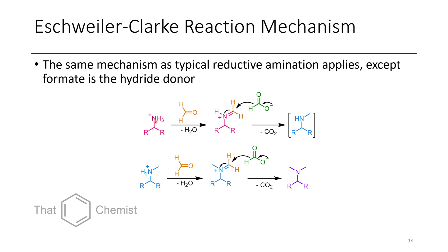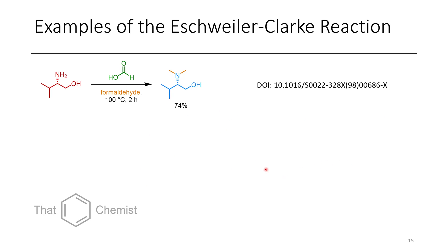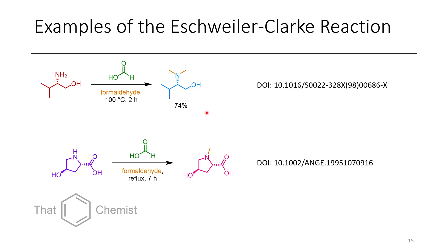Because secondary amines are more reactive than starting primary amines — based on N-parameters, the more substituted the amine, the more reactive it is — the secondary amine undergoes another methylation, forming the tertiary amine product. The advantage of reductive amination in general is you won't form quaternary ammonium salts, because you can't form a quaternary iminium. If you used something like iodomethane, these would keep reacting. Examples include the methylation of an alcohol-containing substrate adding two methyl groups, and the methylation of a pyrrolidine in the presence of a carboxylic acid and alcohol where only the methyl group goes to the nitrogen.